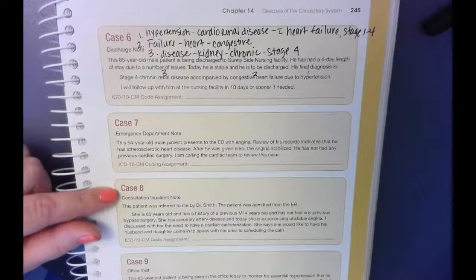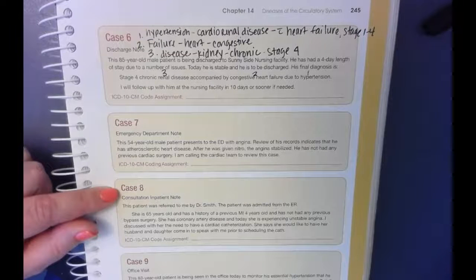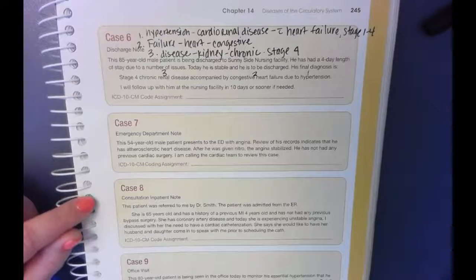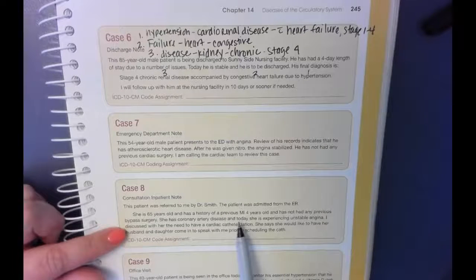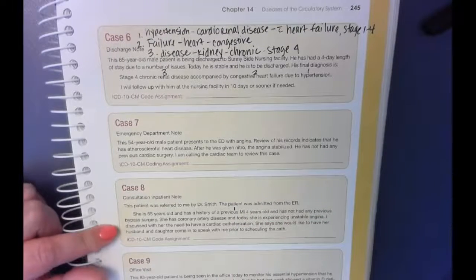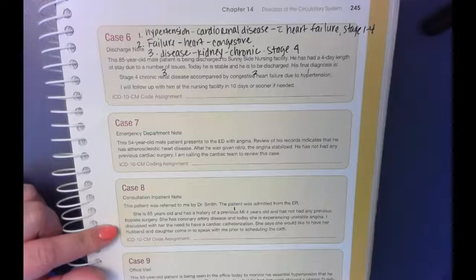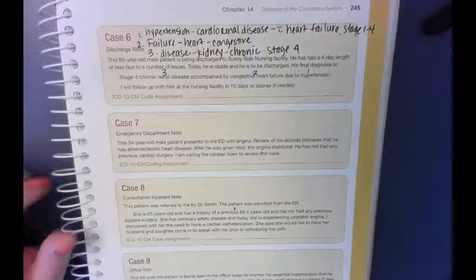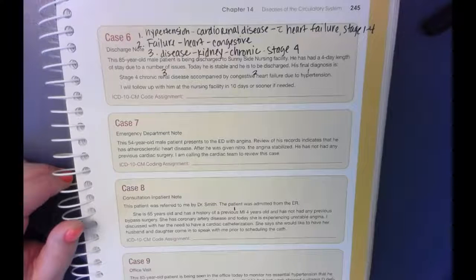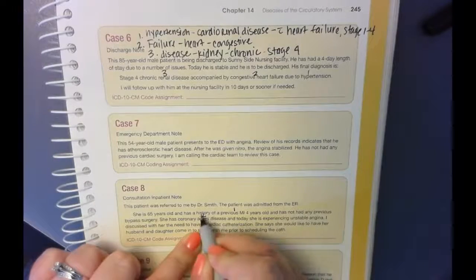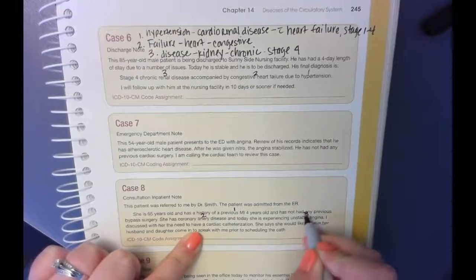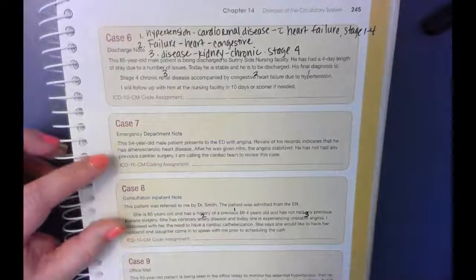Case eight, we have a consult note for an inpatient. Previous history of an MI. That's going to be important. No previous bypass surgery. She has unstable angina. She needs a cardiac cath. That's PCS coding, so we don't care about that right now. So she has coronary artery disease, previous myocardial infarction, previous heart attack, and she has angina. You're going to have three for this one as well. So we'll start with the angina. So we'll look up angina.